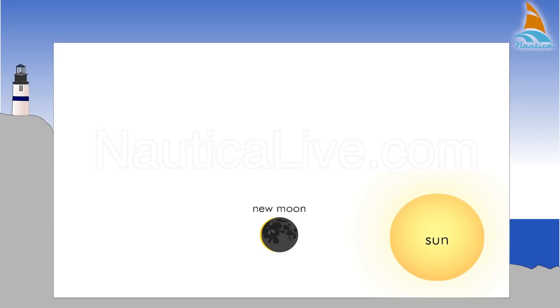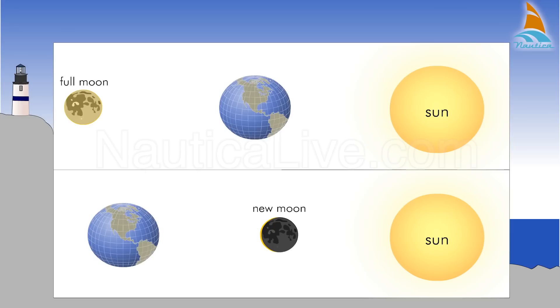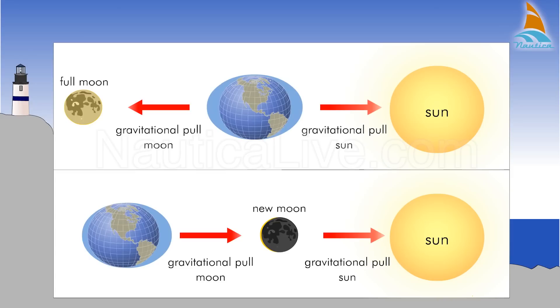They occur when the sun and the new moon, or the sun and the full moon, are in a straight line with the earth exerting a larger than normal gravitational force, and therefore causing a greater than usual tidal range.